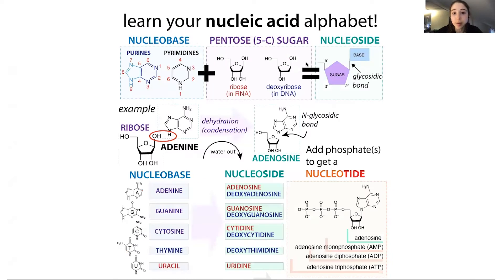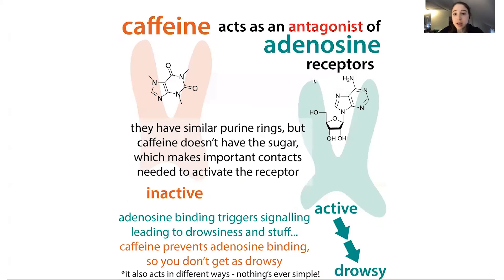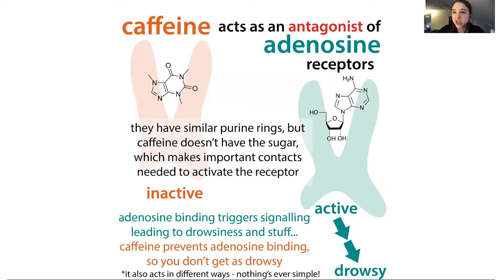A nucleoside is where you have a nucleobase attached to a pentyl sugar — so ribose or deoxyribose. In this case it is ribose, so this is like an RNA letter, but it doesn't have the phosphates on it yet. If we put phosphates on it, we could get ATP, which can be used for energy as well as as a letter.